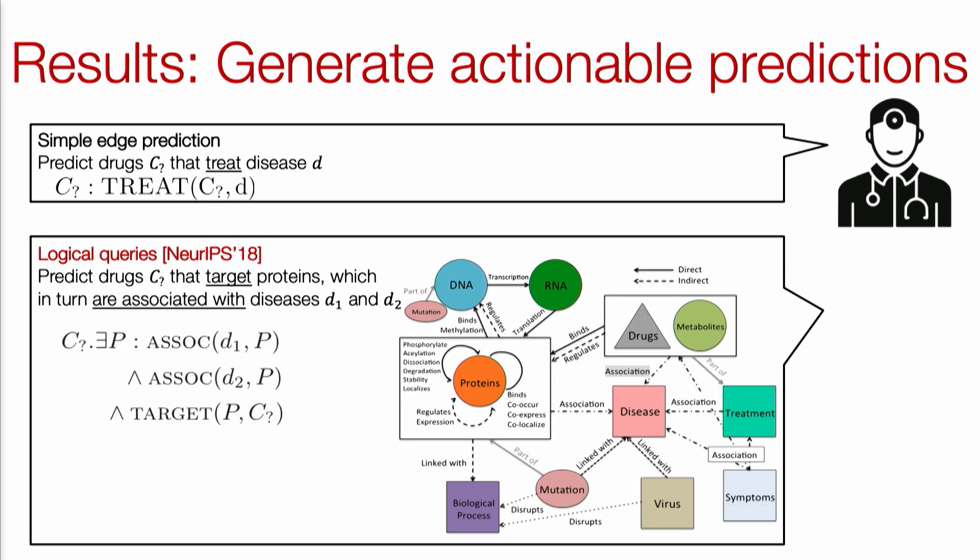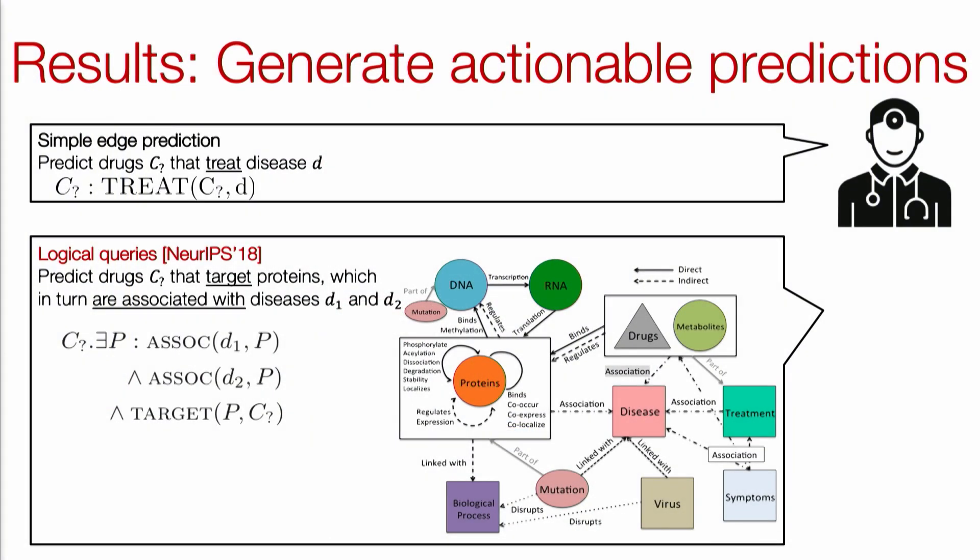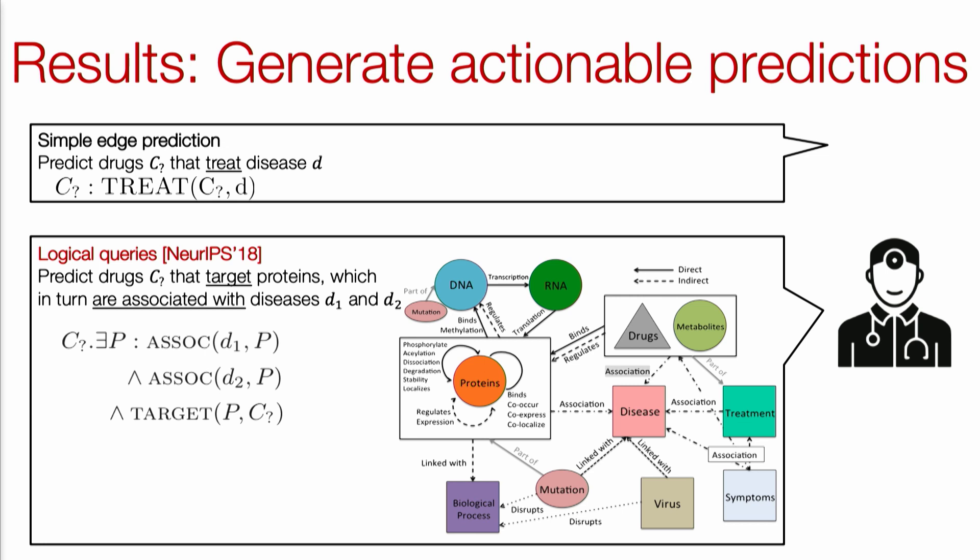In order to generate truly actionable predictions that can directly guide experiments in the wet lab, those predictions often go beyond the simple prediction tasks we tackle in machine learning on graphs — such as link prediction, community detection, and node classification. What domain experts really need is to ask complex questions that go beyond just two entities, such as: what drug would target certain proteins and treat a particular disease? If we can answer these more complex logical questions, this gives a more immediate concrete idea on how to design further experiments. This is really where we need to go in order to transform computational predictions into actionable hypotheses.